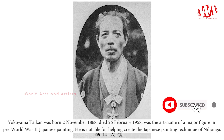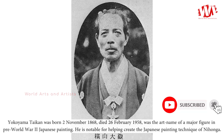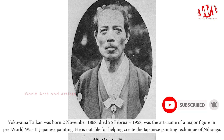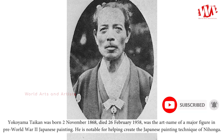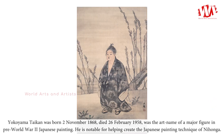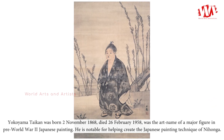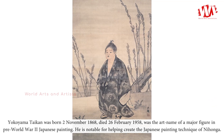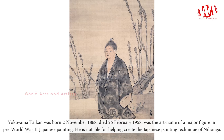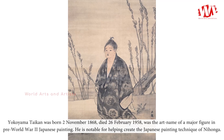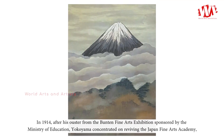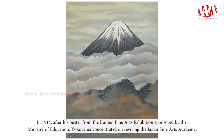Yokoyama Taikan, born November 2nd 1868 and died February 26th 1958, was the art name of a major figure in pre-World War 2 Japanese painting. He is notable for helping create the Japanese painting technique of Nihonga in 1914.